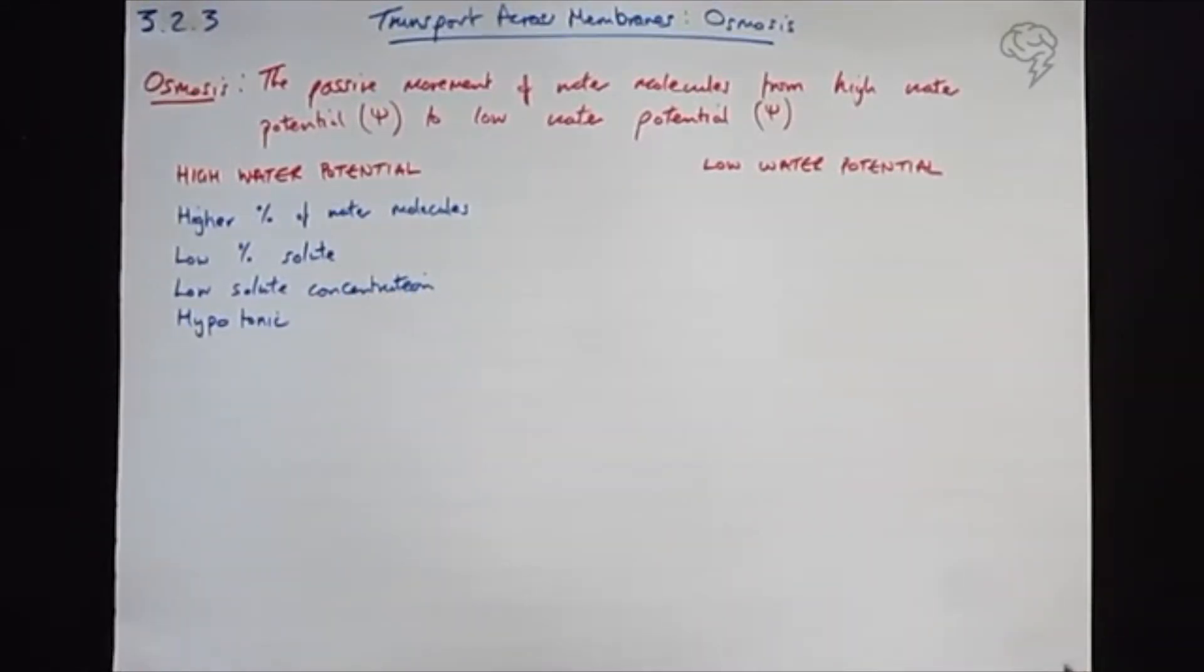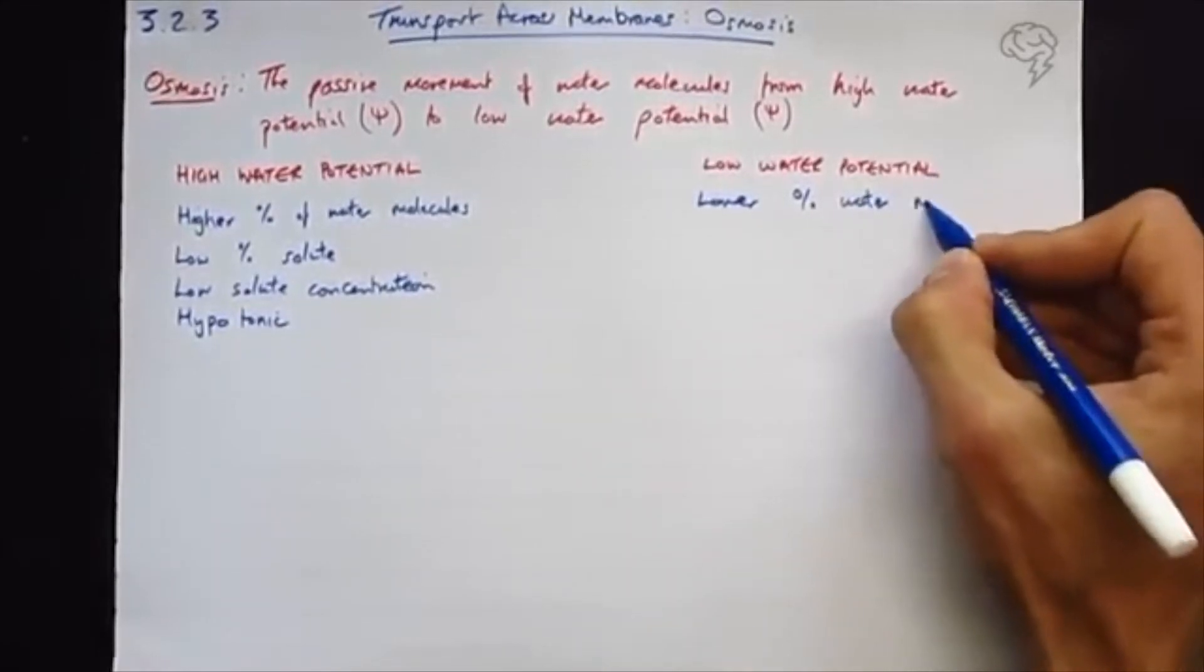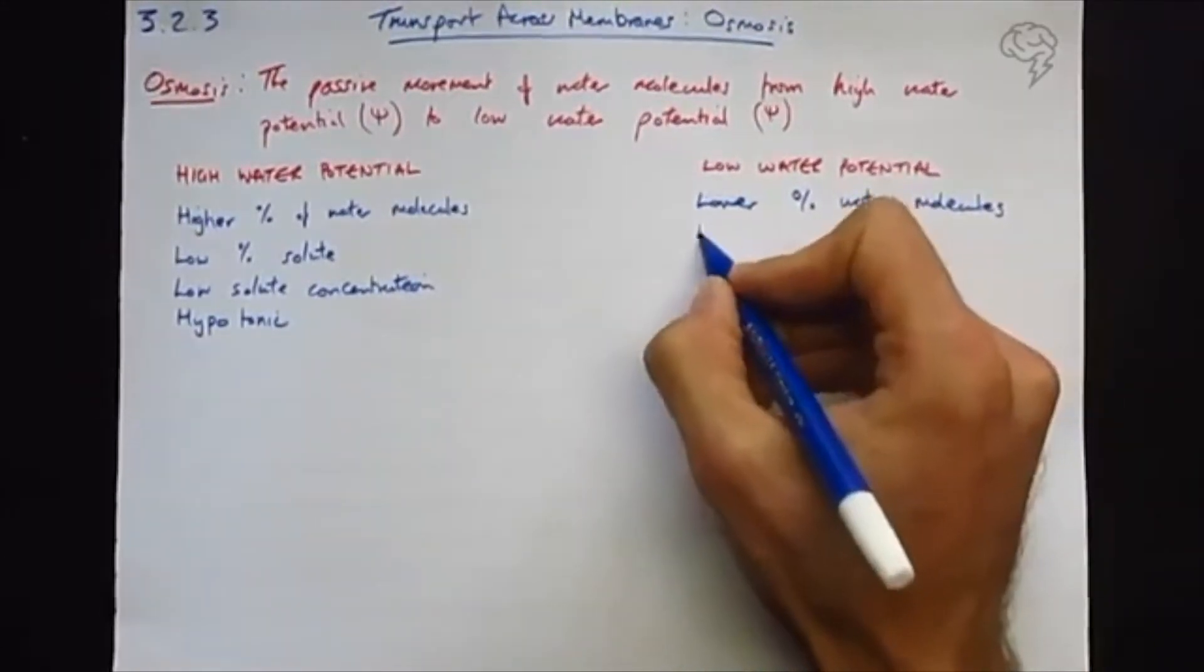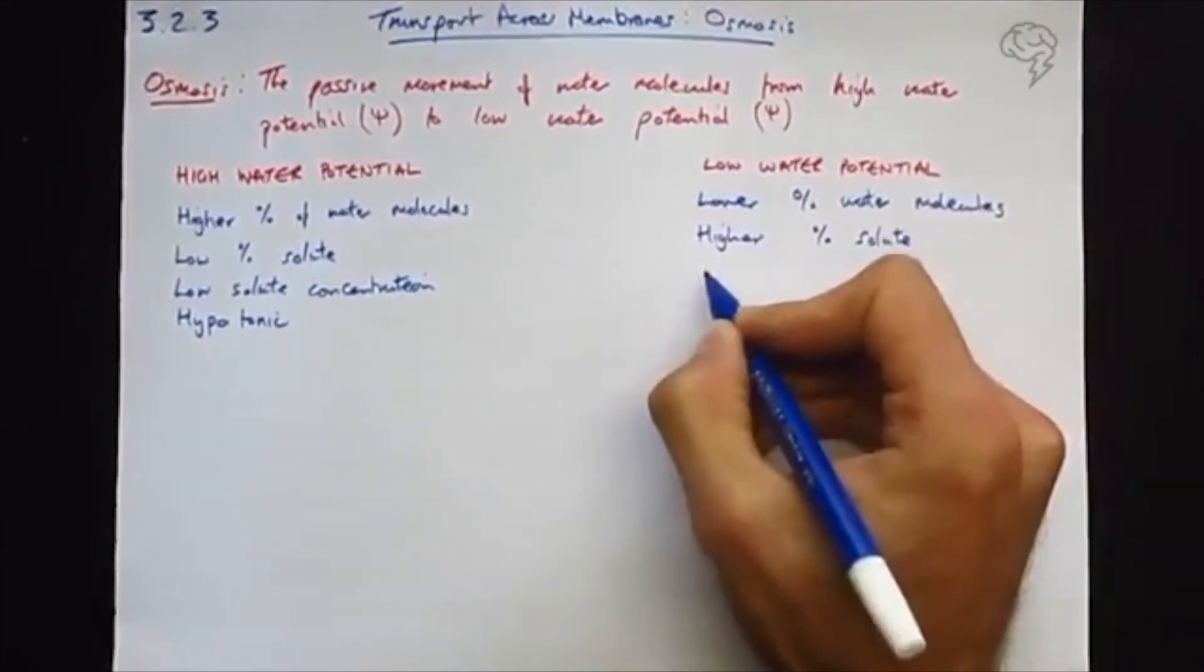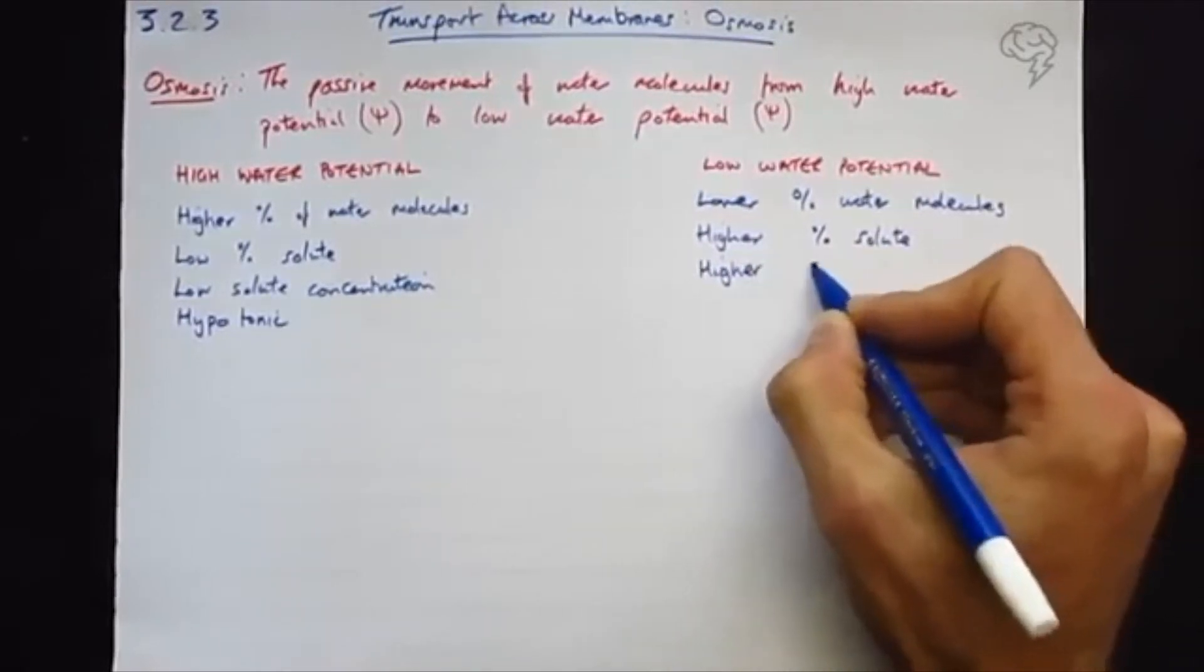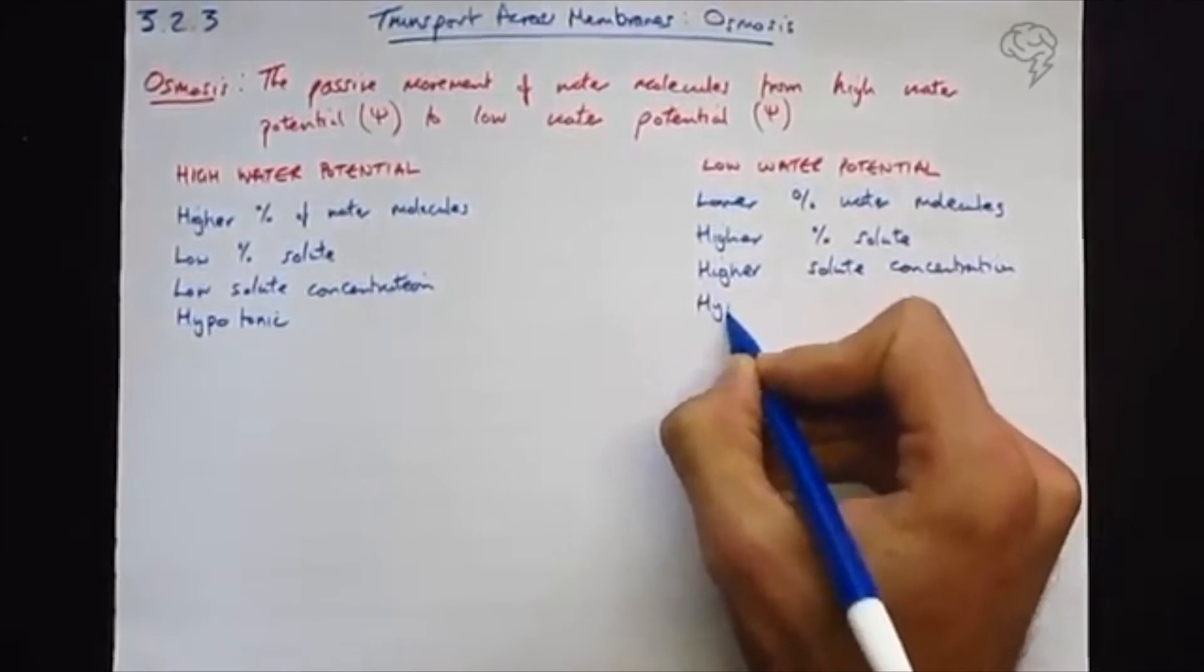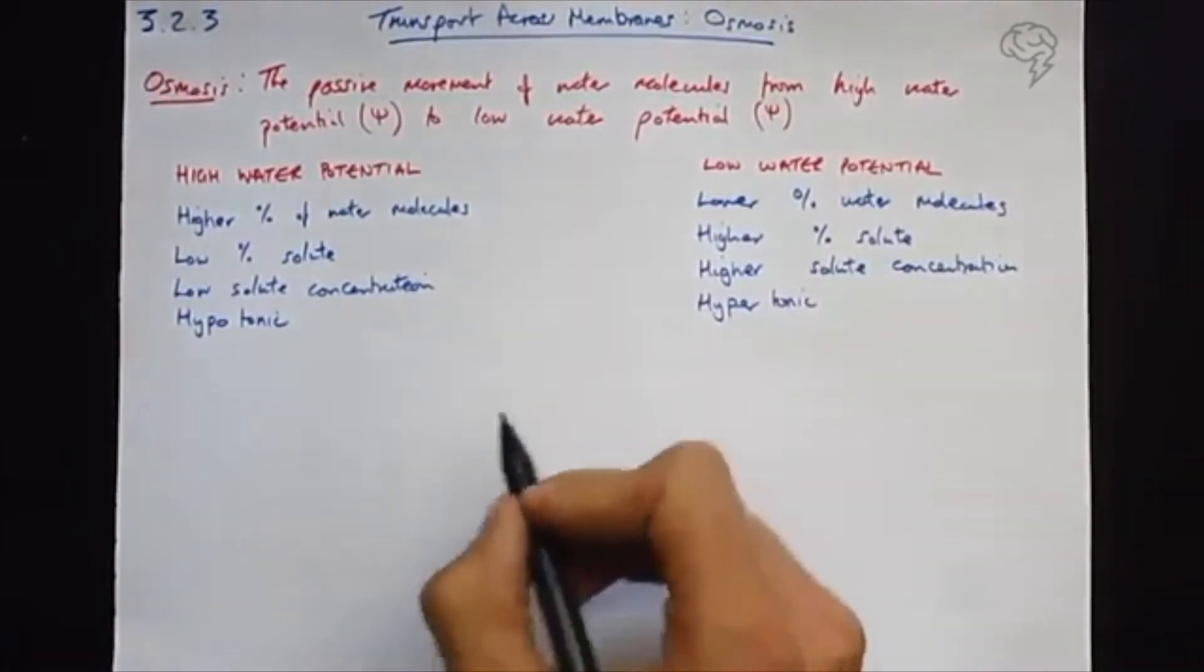So we can look at the opposites of this. For water potential, low water potential, it's going to have obviously the lower percentage of water molecules. It's going to have a higher percentage of solute, or it's going to have the higher solute concentration. And we could describe it as hypertonic or more concentrated.